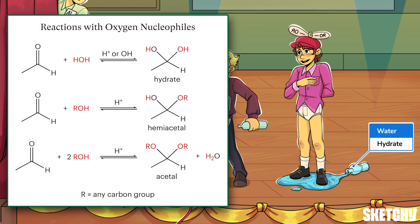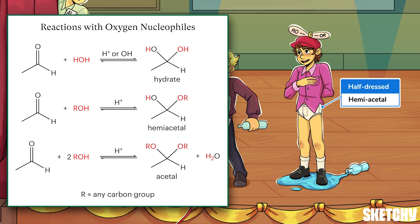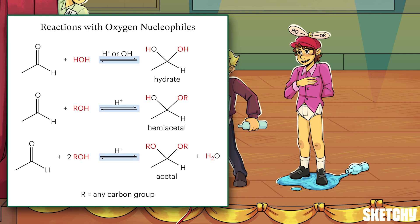A hydrate forms from one equivalent of water, like the water spilled on the floor, attacking. An acetal is formed by attack of two equivalents of alcohol, like the two blades on our tipsy singer's goofy hat. And a hemiacetal comes from one molecule of alcohol attacking — that's why the acetal hat singer is also hemi-dressed. He must have had just enough alcohol to forget his pants. It's also important to keep in mind that all three kinds of products are formed reversibly, meaning that under the right conditions, they can revert back to the original carbonyl in the ketone or aldehyde.